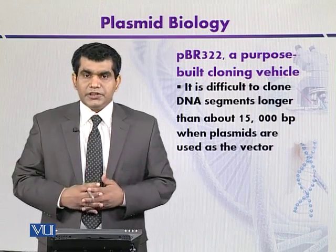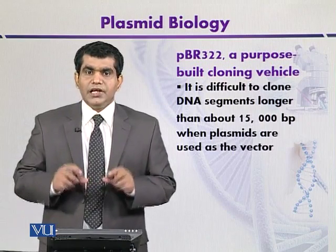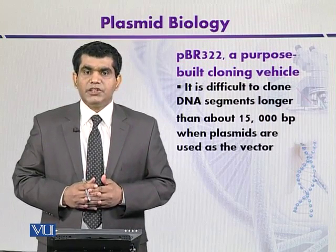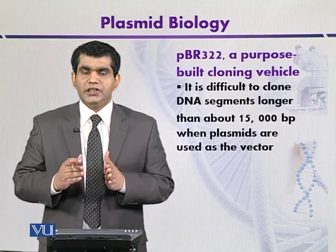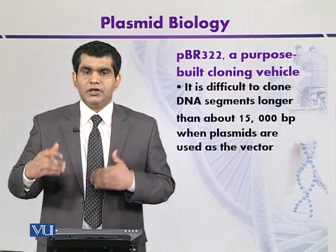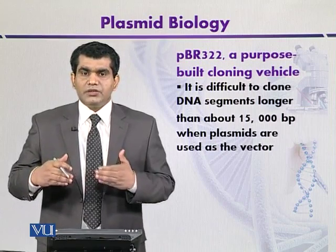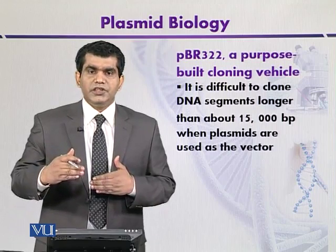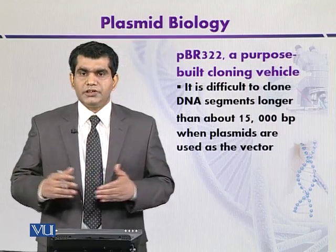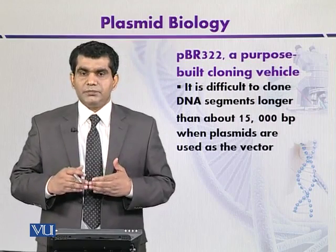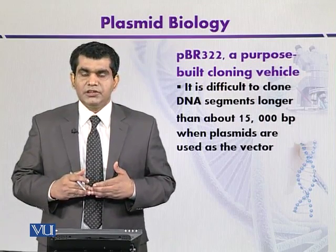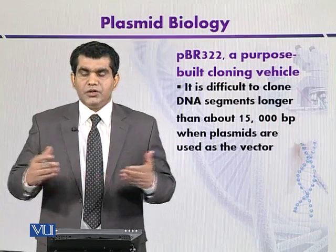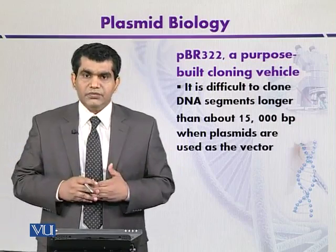There is also a limitation regarding the length of the fragment that is cloned. The length should not exceed 10,000 base pairs or 10 kilobases. When the length increases from 10 kilobases to 15,000 bases or 15 kilobases, the instability of the plasmid increases, meaning it will not segregate equally into daughter cells during cell division.